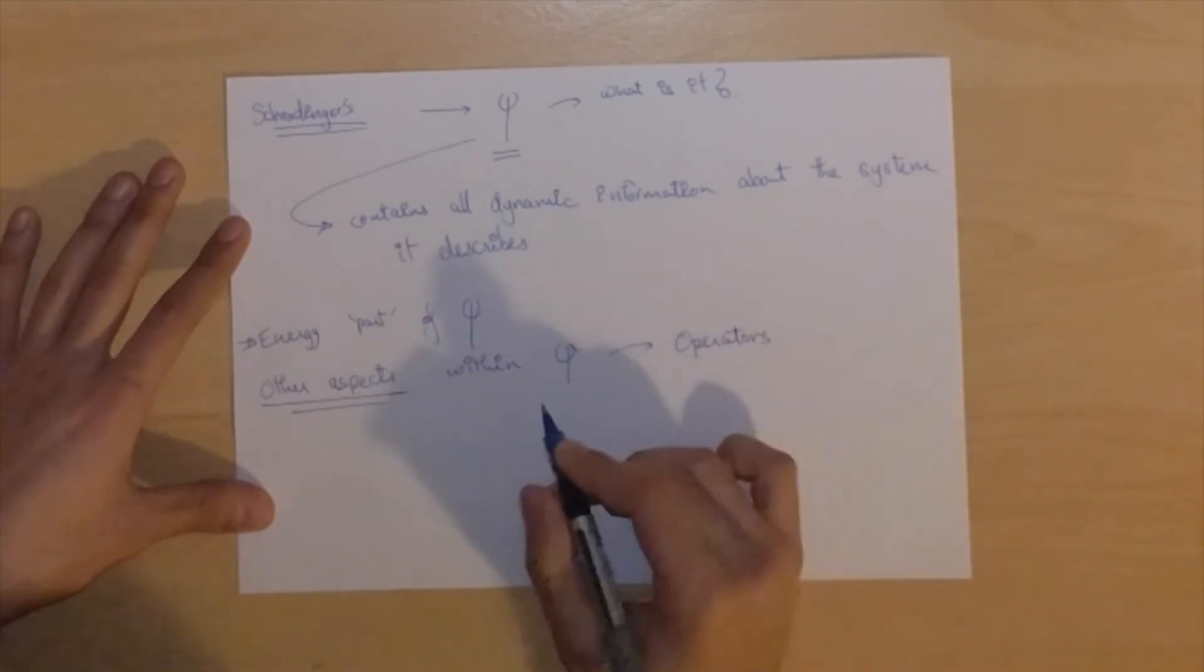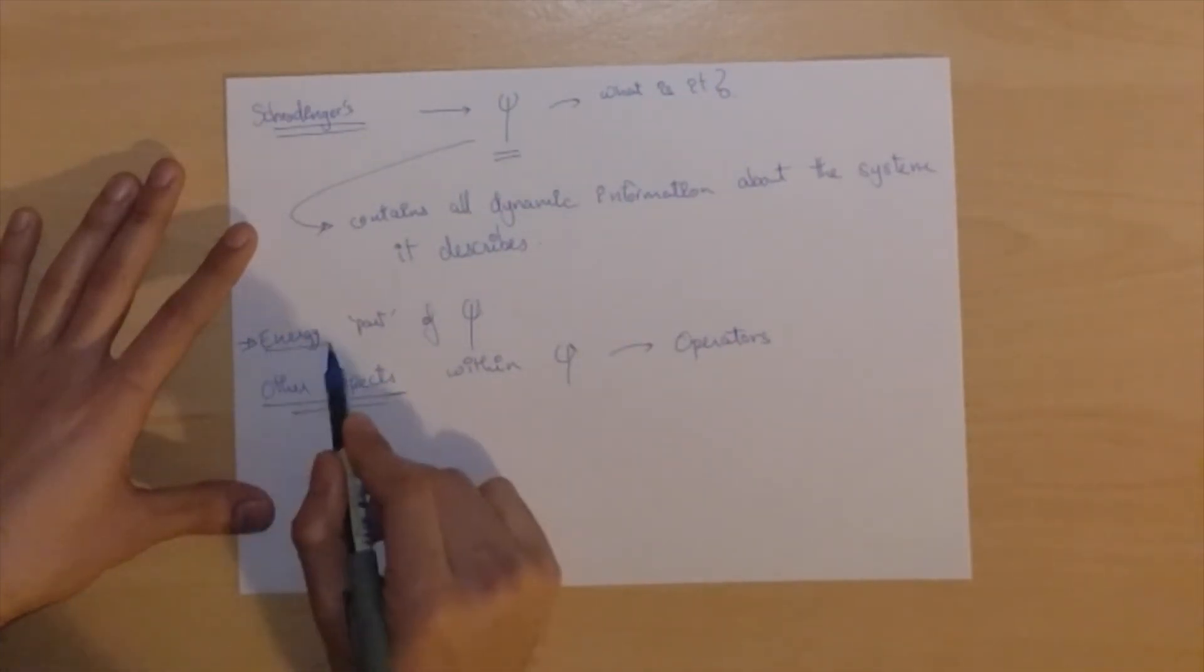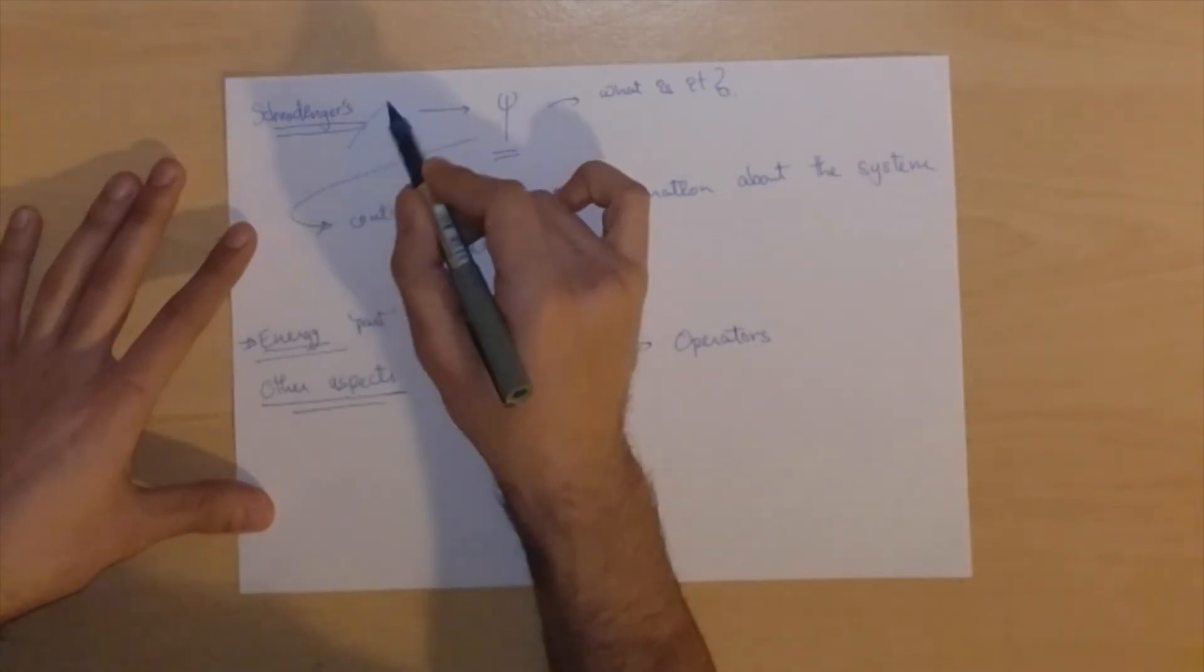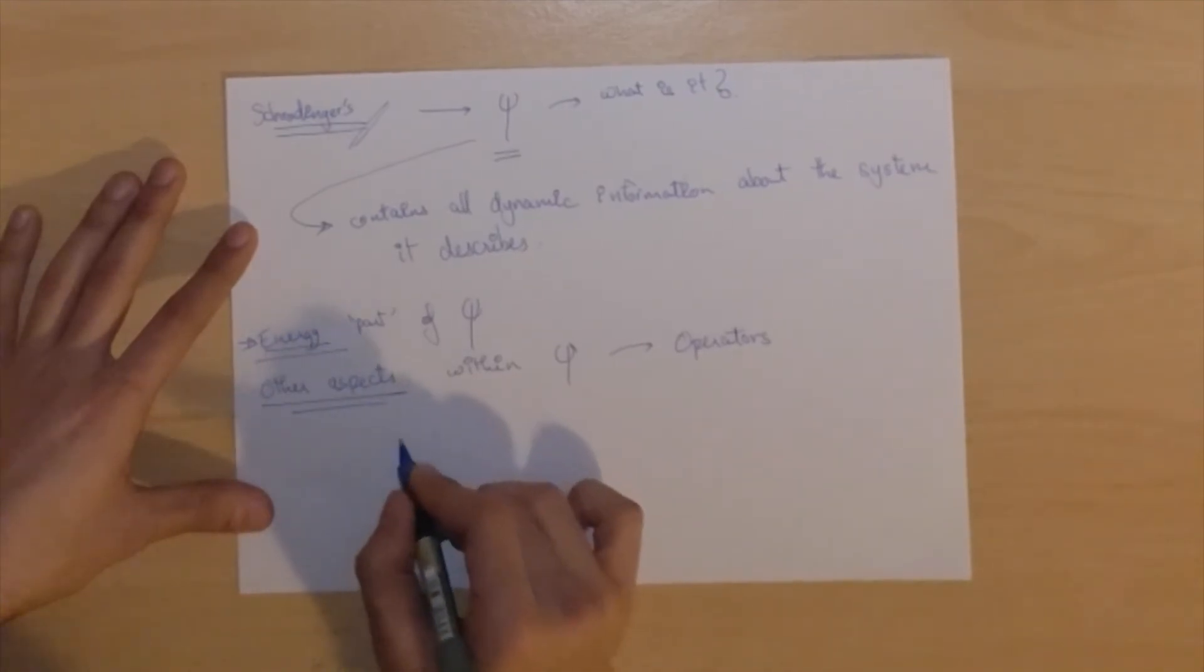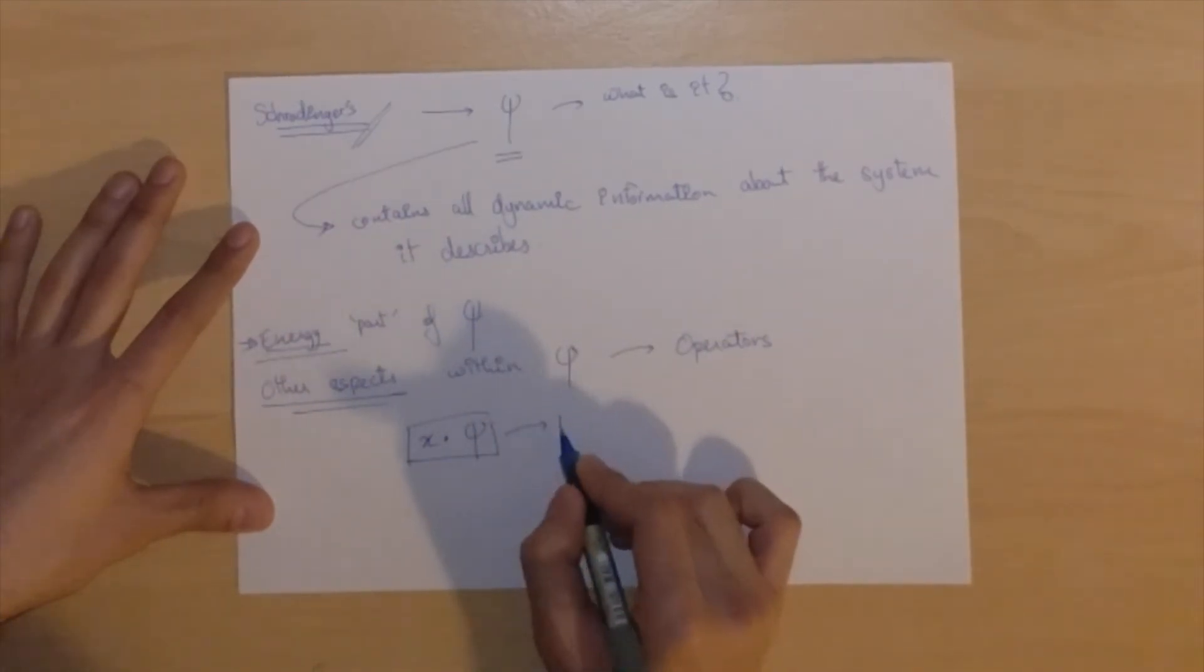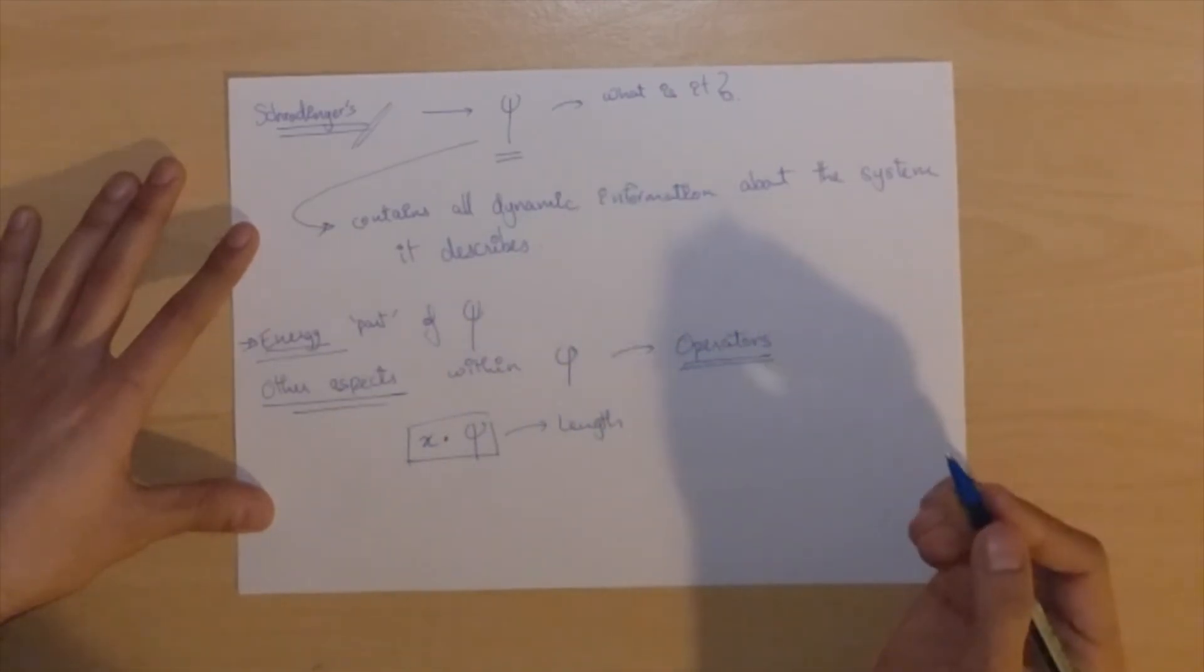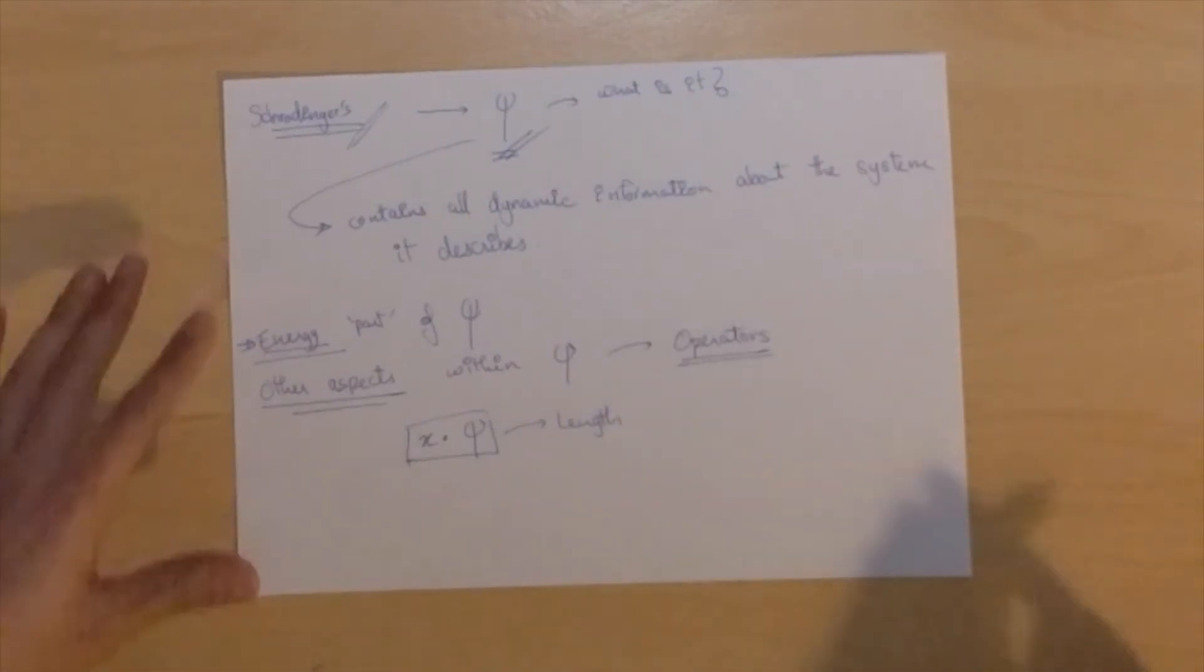So by operating on the wave function we extract what we need. By using a specific operator for energy, as was done in Schrodinger's equation, we obtained an energy balance for the wave function. But we can also use another operator, such as the length operator, so multiplying the wave function times length, which will give you, as you would expect, a length. We will go into operators in greater detail later on. For now we're just going to try and figure out what this wave function actually represents.